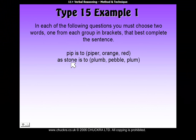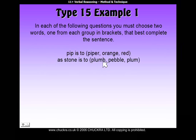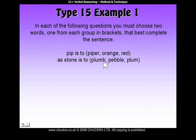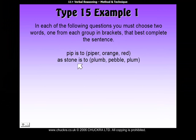Let's have a look at the second line. Stone and plum — be careful here, because this 'plum' is a weight on the end of a string used by builders or carpenters to check if something's vertical, whereas the other 'plum' is the fruit. So stone and plum — there's no real obvious connection there.